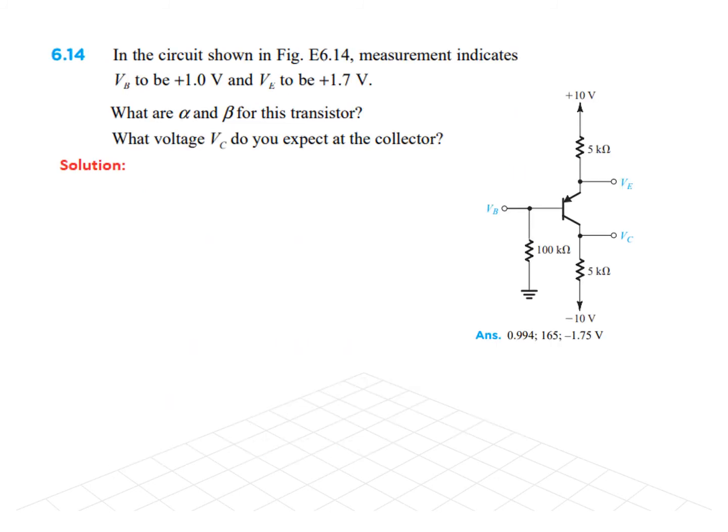Now, the last question is 6.14. In the circuit shown in figure, measurement indicates VB to be 1 volt. That means the voltage here is 1 volt. And VE to be 1.7 volt. So, VE 1.7 volt. And now, if you note that the E is on the top side and C is on the bottom side. And this is because it is a PNP transistor. The PNP transistor will have emitter positive and collector negative. Okay. What we need to find is alpha and beta and also the voltage VC. So, this is given 1 volt and 1.7 volt. Find alpha and beta. For this, we will use, first of all, this arrangement to find the currents and then we can find alpha and beta.